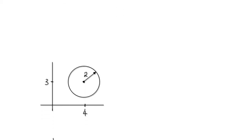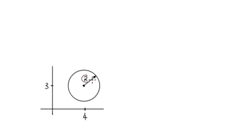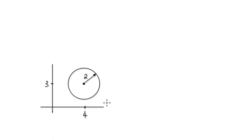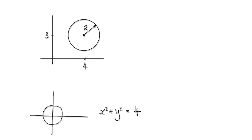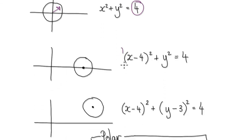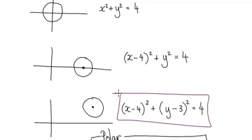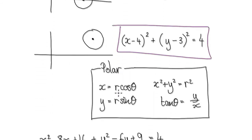In this video we're going to come up with a polar equation for a circle of radius 2 that has been shifted across by 4 and up by 3. We start with the equation of a circle of radius 2, move it across by 4, then shift it up by 3. In Cartesian form it will be given by (x - 4)² + (y - 3)² = 4. Now we convert into polar form.